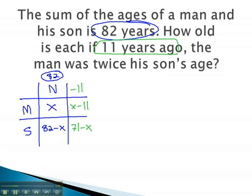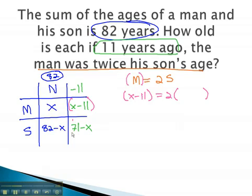We use the rest of the problem to make our equation. The man was, or equals, twice his son's age, 2 times the son. We then can replace the m with what he was in the past, x minus 11. Similarly, we get 2 times the son, who in the past was 71 minus x.